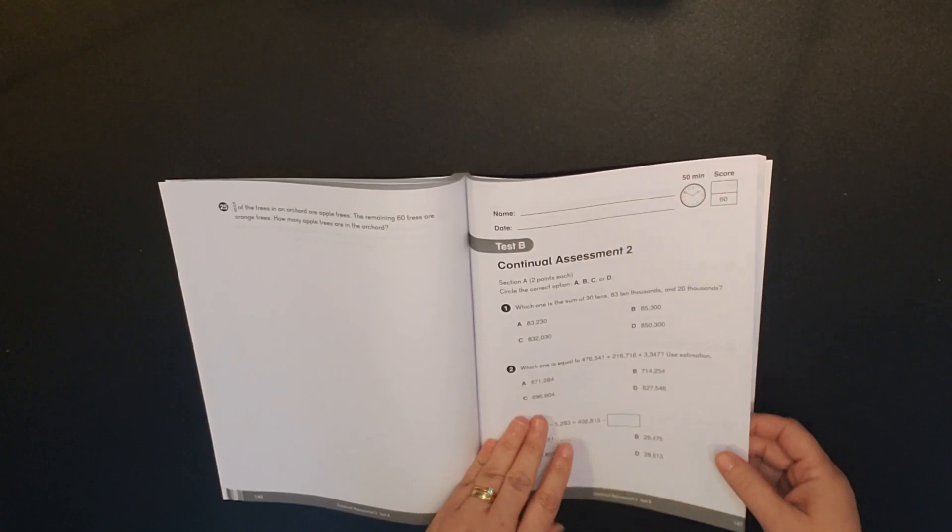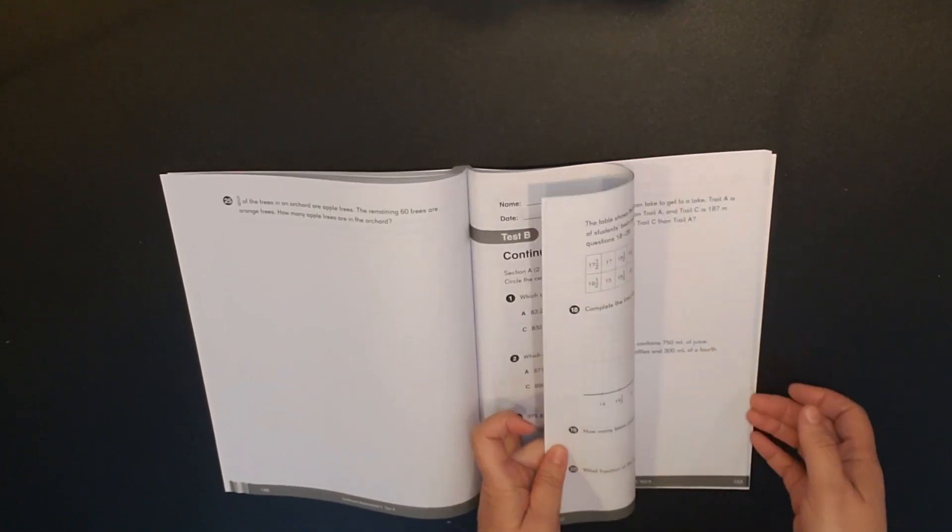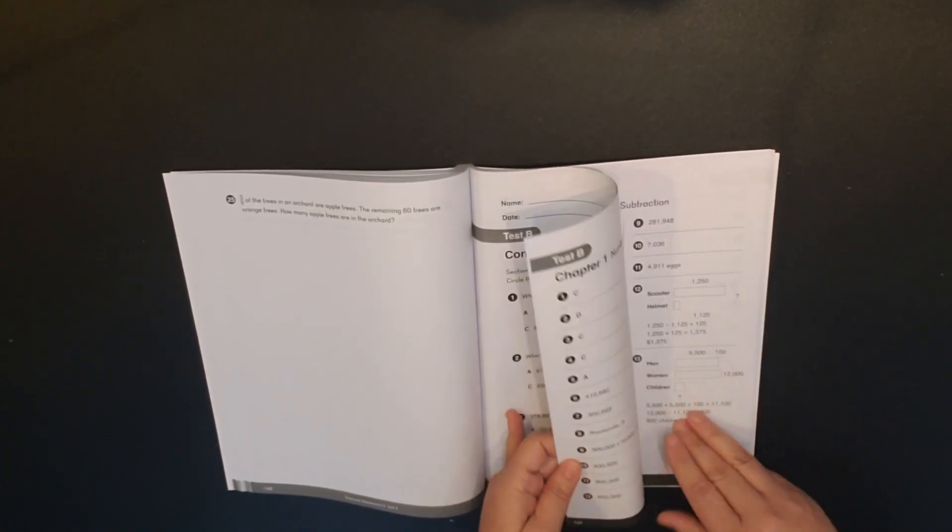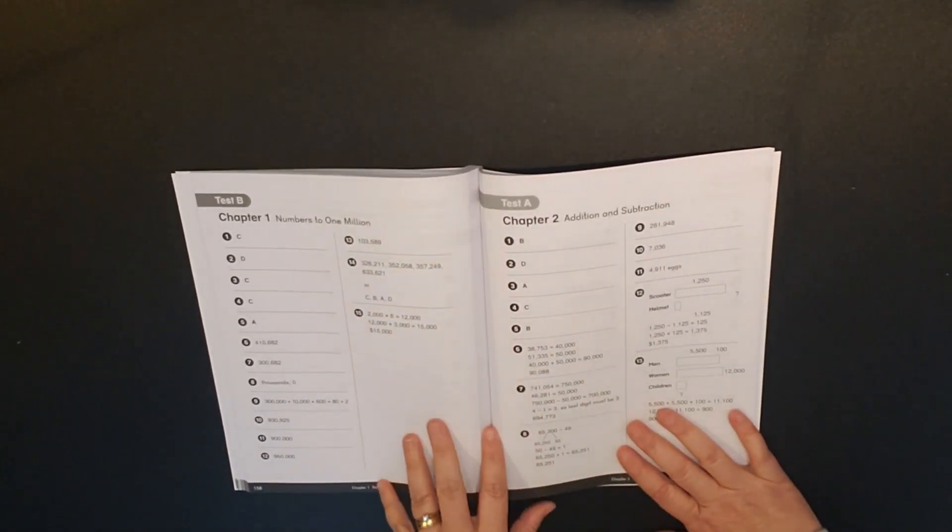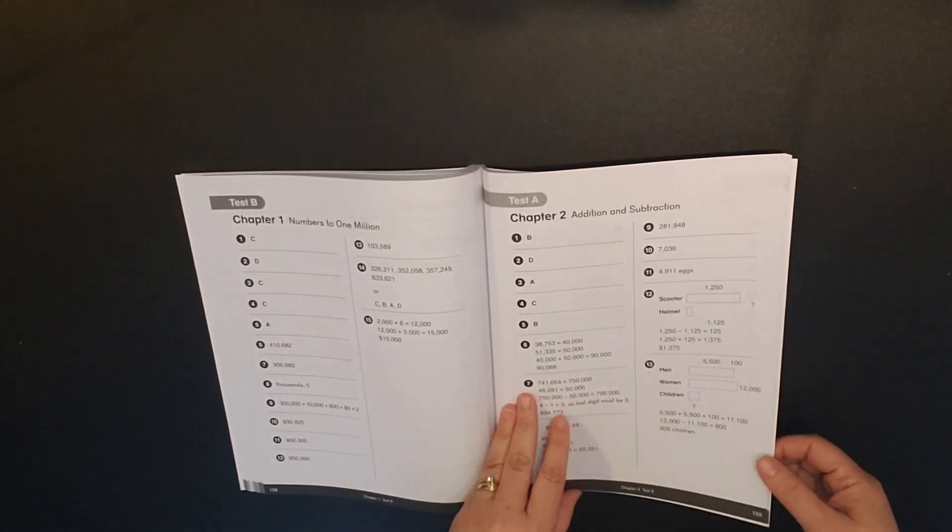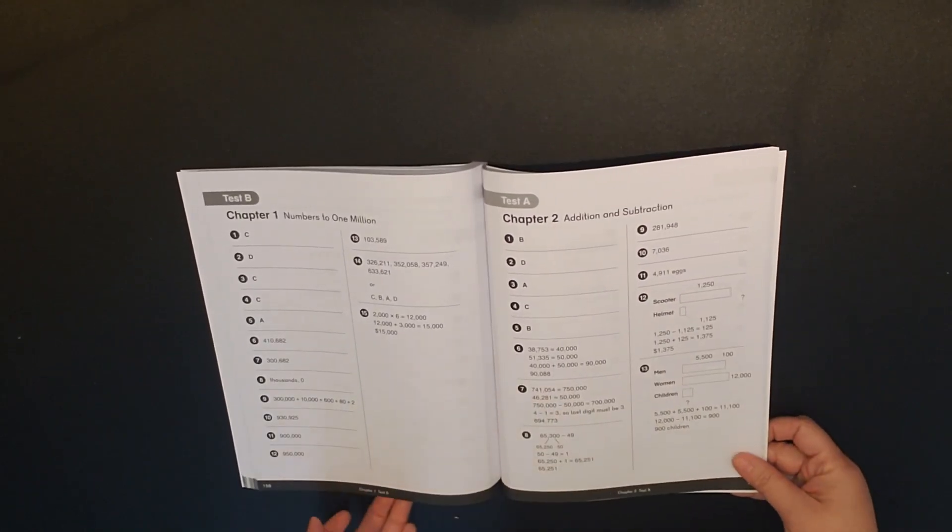For these continual assessments, there's also a test A and a test B. And so the continual assessment will really look at everything that you have covered thus far. And then there is also the answer key in the back of the test booklet for both test A and test B.